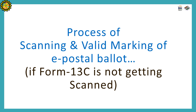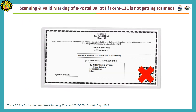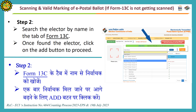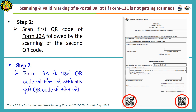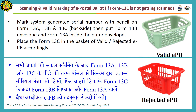Process of scanning and valid marking of E-PB if form 13C is not getting scanned. If unable to scan form 13C, open it and take out form 13A and 13B. Search the elector by name in the tab of form 13C. Once the elector is found, click the add button to proceed. Then scan the first and second QR codes of form 13A, followed by the QR code of form 13B. Mark the system-generated serial number with pencil on form 13A, 13B, and 13C. Put form 13B and 13A back inside form 13C and place it in the basket of valid or rejected E-PB as the case may be.